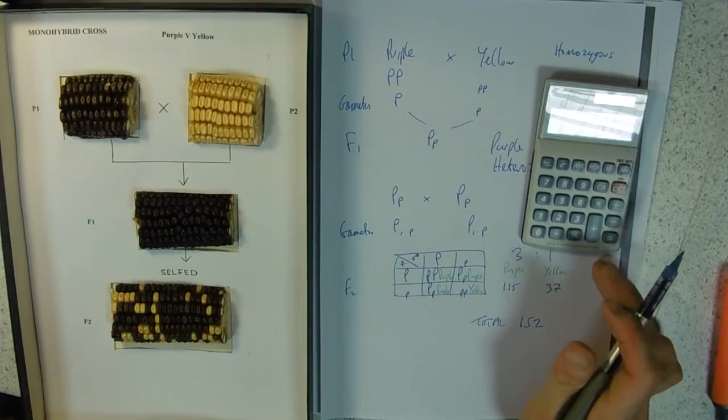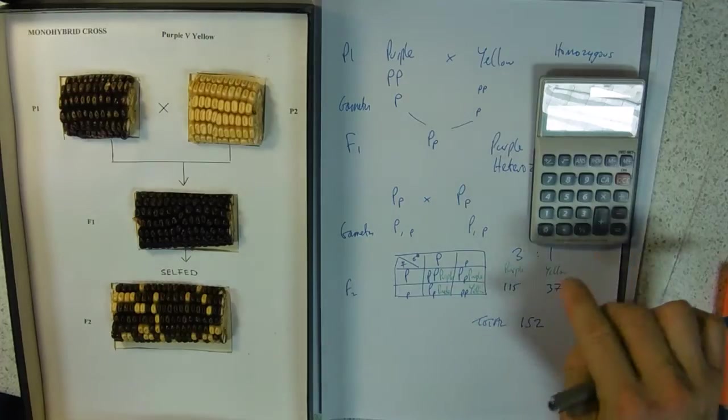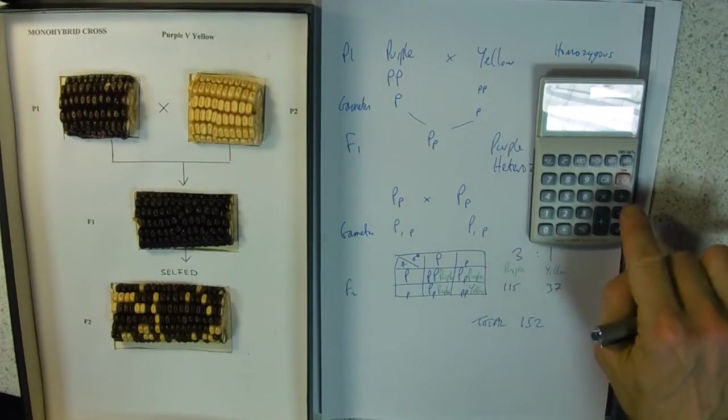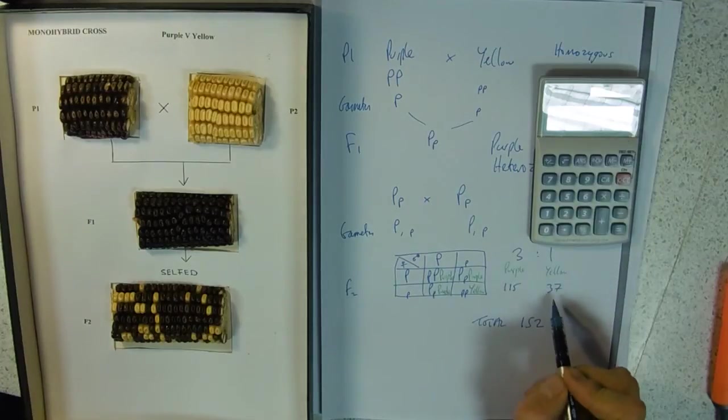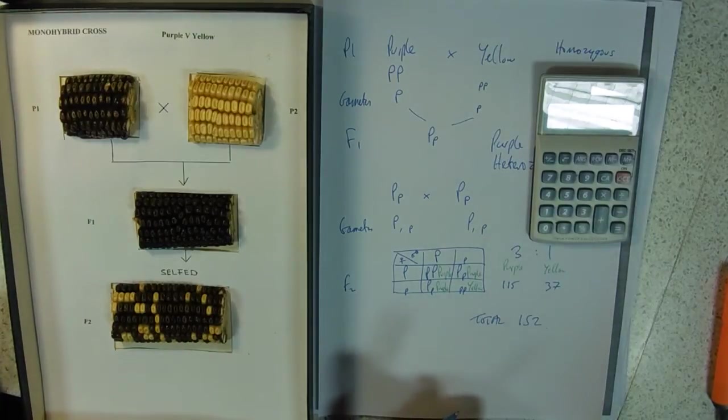The others must be purple - 115 of those. Does that fit into our three to one ratio? I'm not quite sure. 152 divided by 4 should be 38, but we only counted 37. It's not quite right. We need to do a chi-squared test to check.